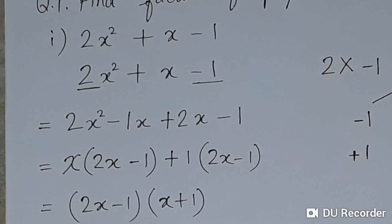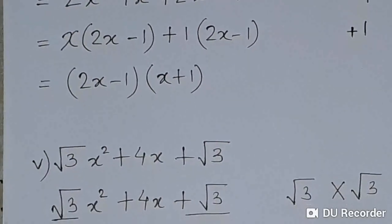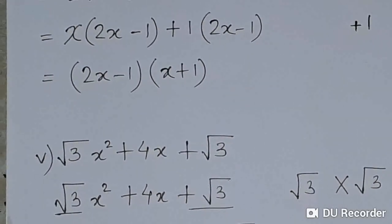So we have found the factors of the polynomial 2x² + x - 1: the factors are (2x - 1) and (x + 1). Now let us take the next problem, question number 5: √3x² + 4x + √3.